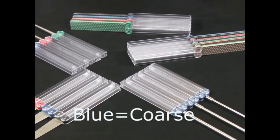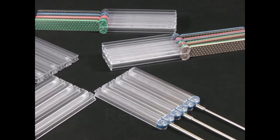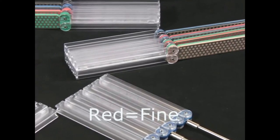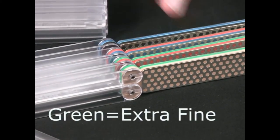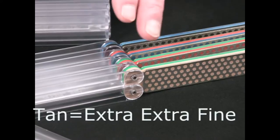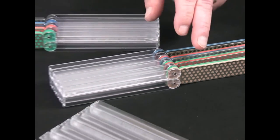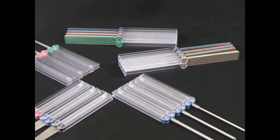All of the different diamond grits are color-coded for easy recognition. We have a black extra coarse, a blue coarse, a red fine, a green extra fine, and our newest addition to the product line, a tan grit and extra extra fine.